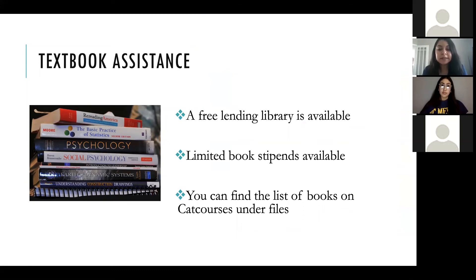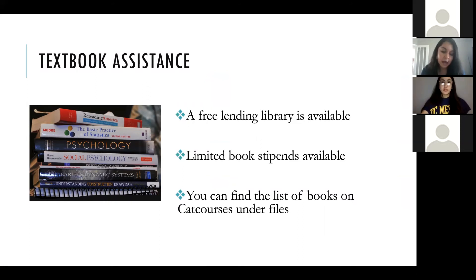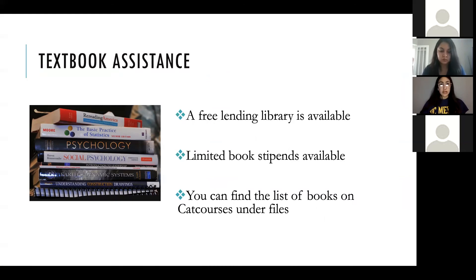The Guardian Scholars Program has a free lending library available to all Guardian Scholars. There is a list of all the books we have on our Cat Courses page, which scholars will receive access to once they join the program. We also have a limited amount of book stipends available; the amount varies semester by semester based on funding. Most of the books are pretty updated because student coordinators have also donated their books to the lending library.